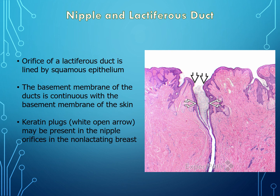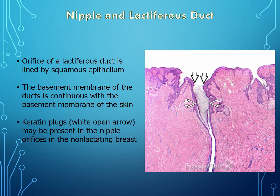Here we have the histology of the lactiferous duct of the nipple. On the surface we have squamous epithelium, and that squamous epithelium actually dives down into the orifice of the lactiferous ducts for a short while. The basement membrane of the ducts is continuous with the basement membrane of the skin — it separates our epithelium from the connective tissue underneath, separating the skin from the dermis. The white fancy arrows show keratin debris, which can be present in the orifices of the non-lactating breast; if milk was flowing through, it would clear out those keratin plugs.